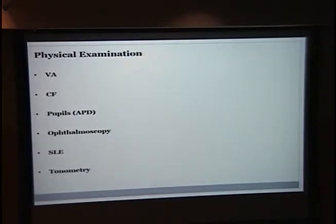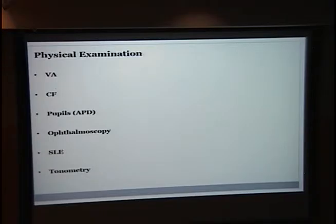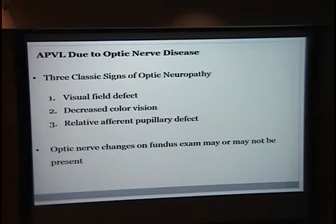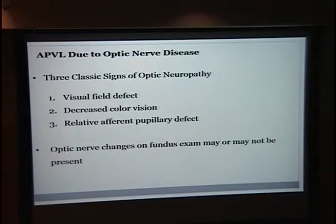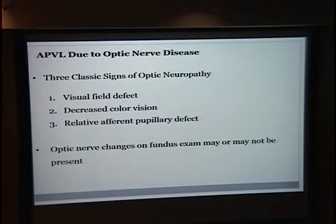For physical exam: visual acuity is important, but a patient might have good visual acuity and yet have poor confrontational fields, so you definitely want to systematically go through the entire physical examination and look for afferent pupillary defects. In terms of optic nerve disease, there are three classic signs: visual field defect, decreased color vision, and RAPD. When these three are present, chances are it's probably a sign of optic neuropathy, although the optic nerve itself may or may not be changed on fundal exam because it could be retrobulbar.